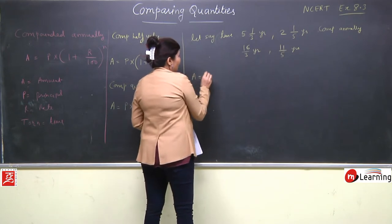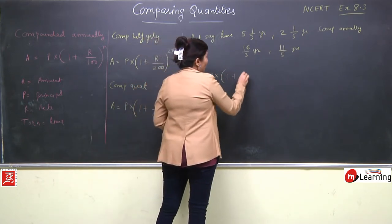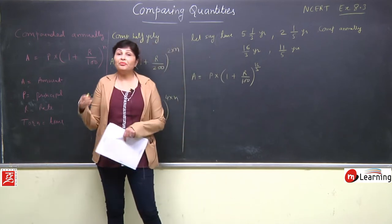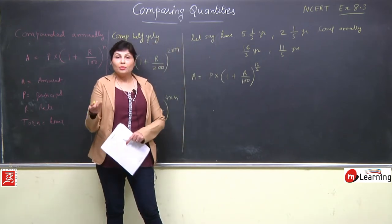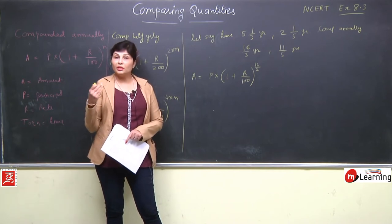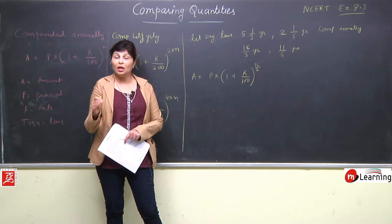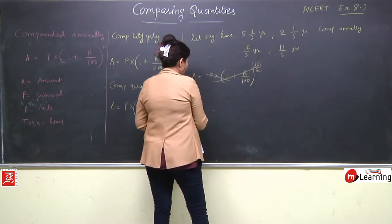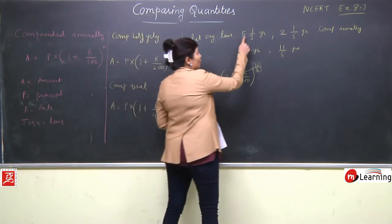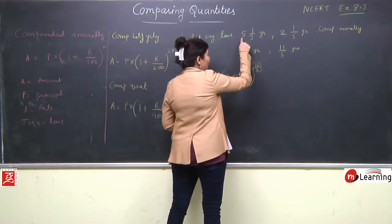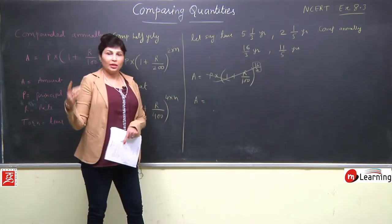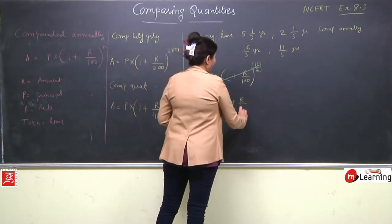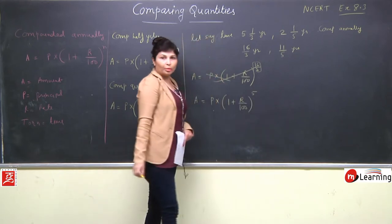If time is 16/3 years in fraction form, we cannot directly put this as power because solving with fractional power is complicated. To avoid this complication, there's a change in the formula - we separate the time. Take the complete 5 years first, and consider the 1/3 year separately.